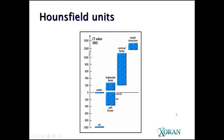This gray value assigned to that small volume is called a Hounsfield unit. It's an arbitrary number named after the Nobel Prize physicist who first invented CT. Water is given the number zero, air is about minus 1,000, and everything else follows. Soft tissue tends to be in the zero-ish area, bone has a denser value, and tooth structure being so dense is going to be a much higher value of Hounsfield units.